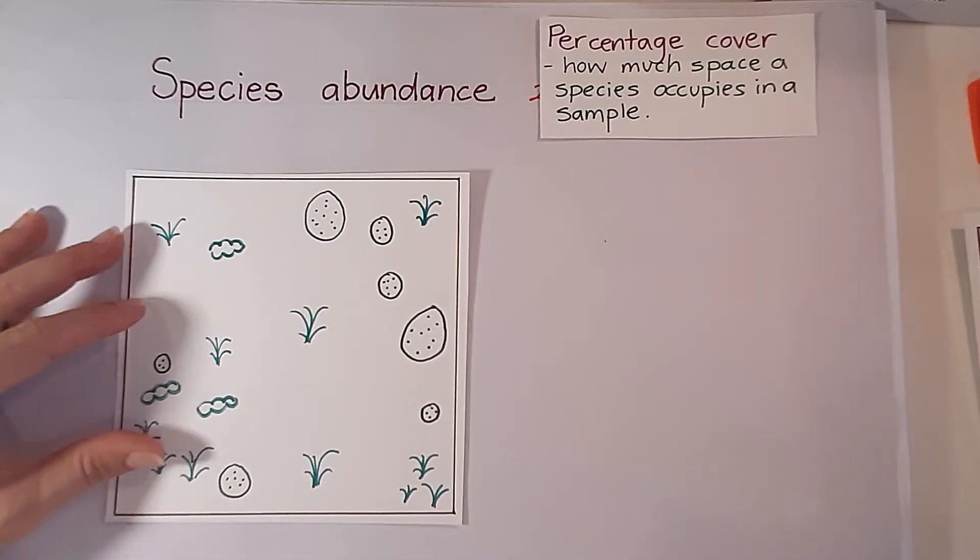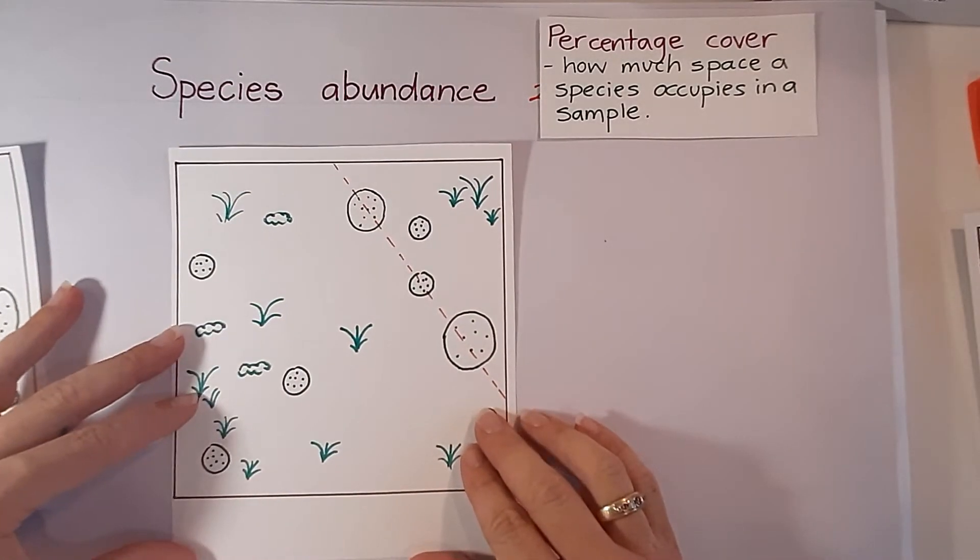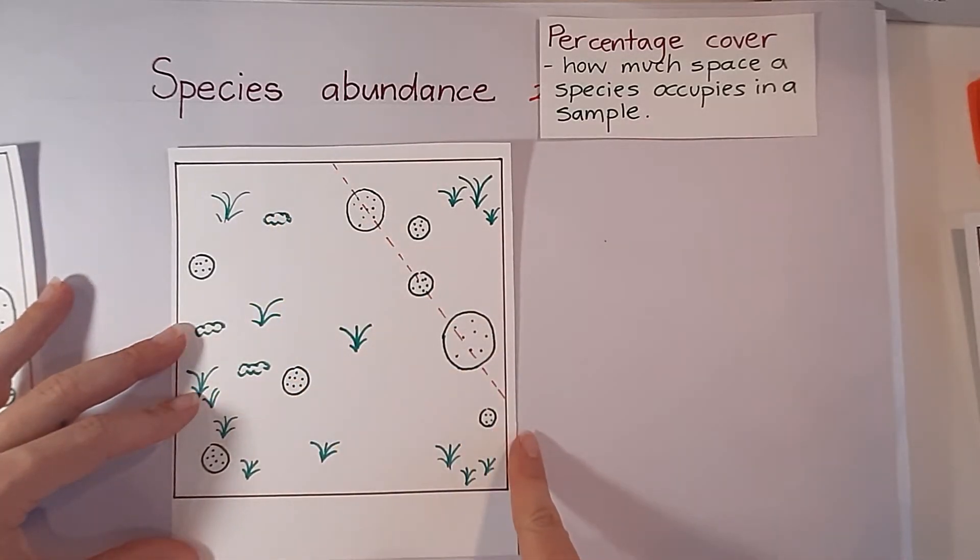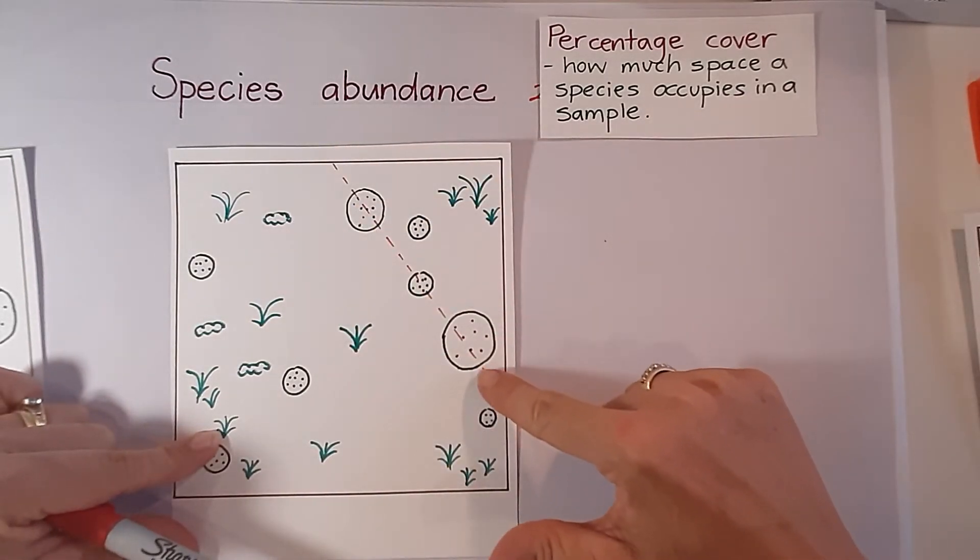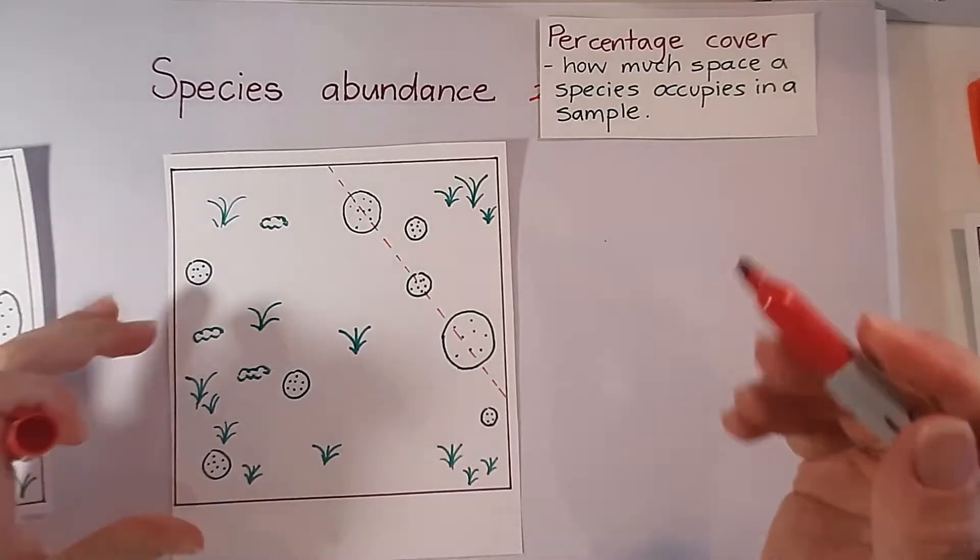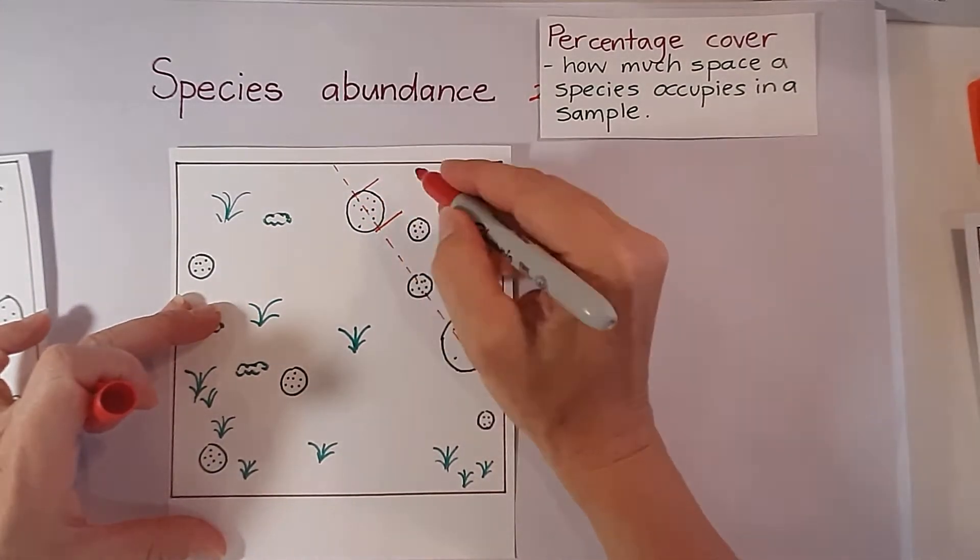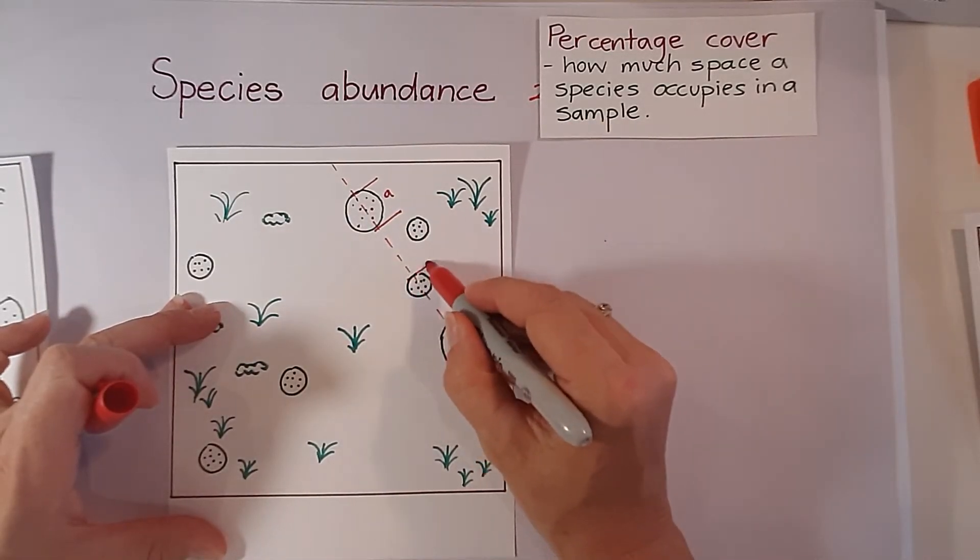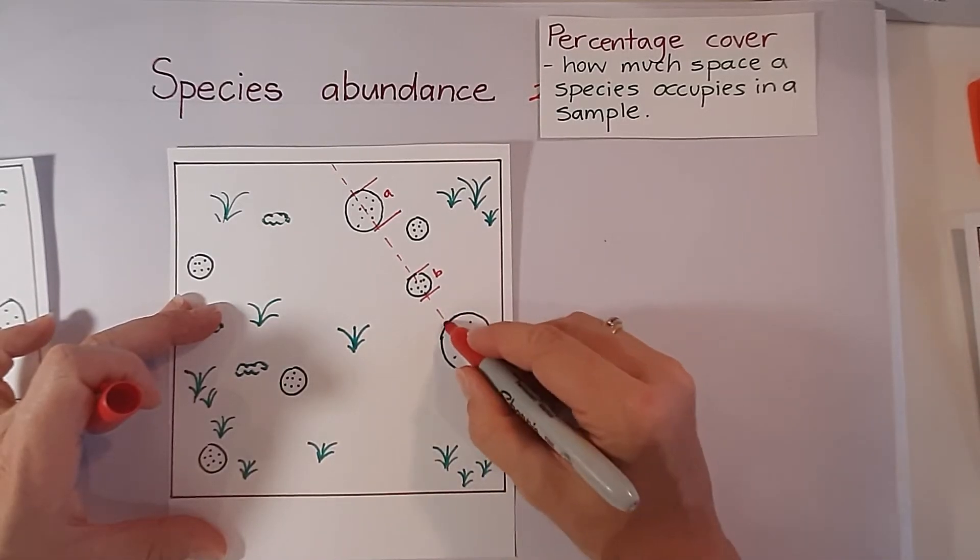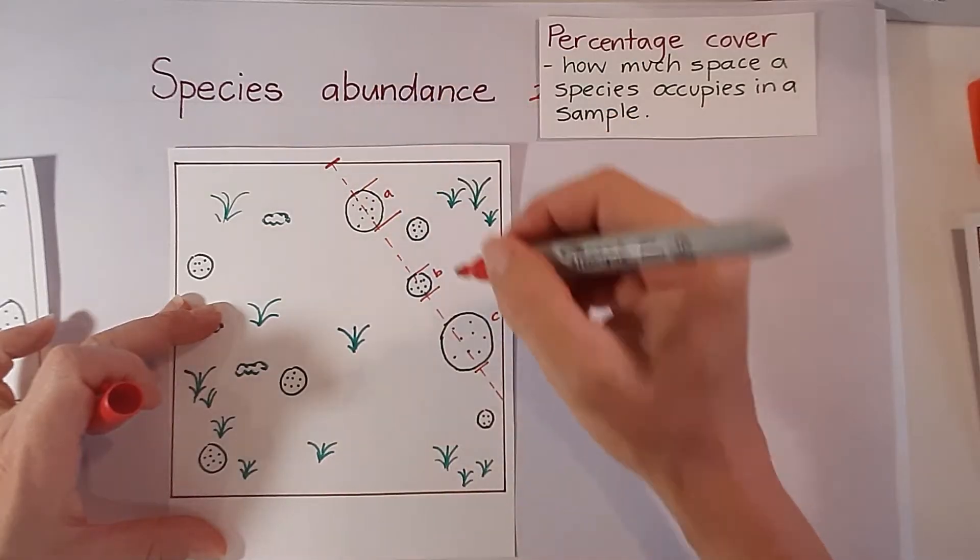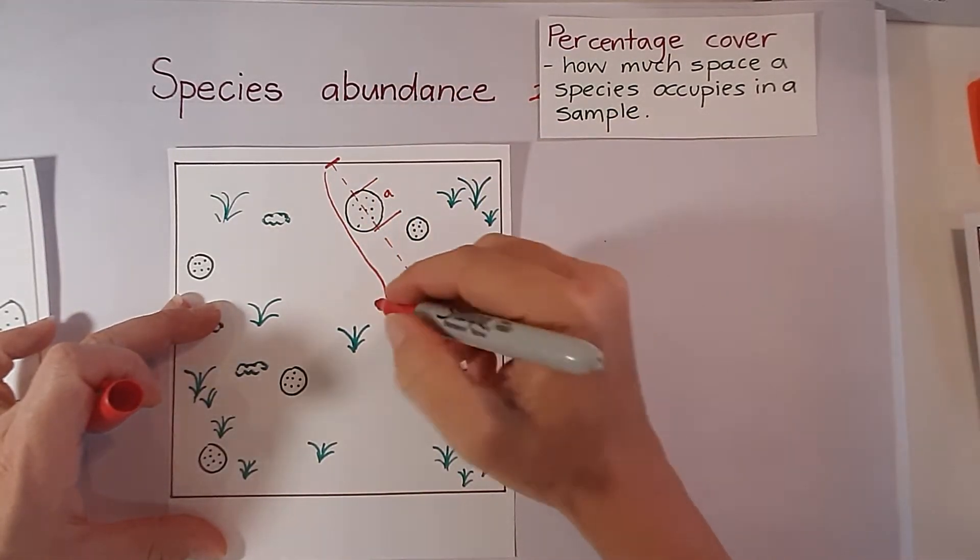Another way is to use transects or line transects. So if we take that same species and we lay out a line transect, we can calculate how much of that line transect is covered by a particular species. So in this case if this is our transect we would want to know the distance from this to here and that would be a, and from here to here would be b, and from here to here would be c. And this whole transect from there to there, that measurement becomes d.